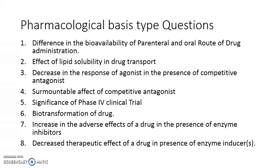Question four is the surmountable effect of competitive antagonist — the effect of a competitive antagonist can be surmounted with an increased dose of agonist; how does this happen? Question five is the significance of phase four clinical trial, also known as post-marketing surveillance, and why it is important. Question six is the biotransformation of a drug — what is biotransformation, why is it important, and what are the different ways? Question seven is the increase in adverse effect of a drug in the presence of an enzyme inhibitor. Question eight is the decrease in therapeutic effect of a drug in the presence of an enzyme inducer — when two drugs are given together and one is an enzyme inducer or inhibitor, what will be the effect on the first drug?